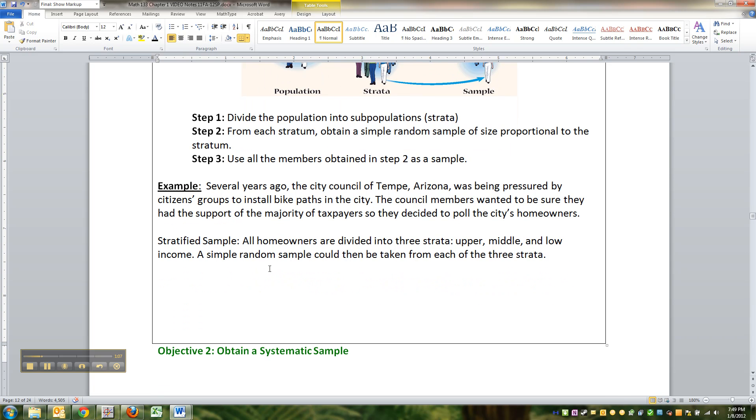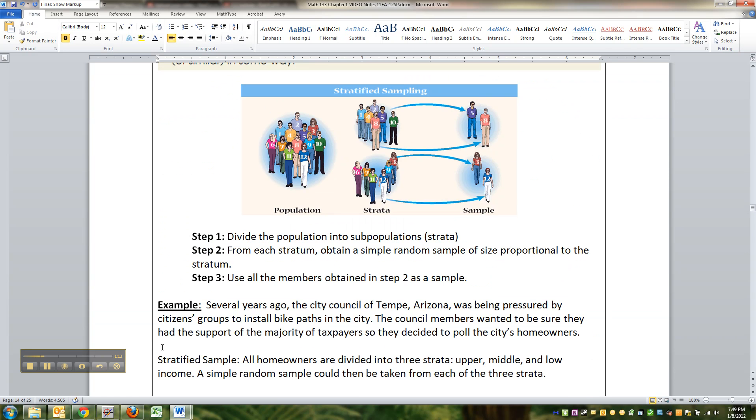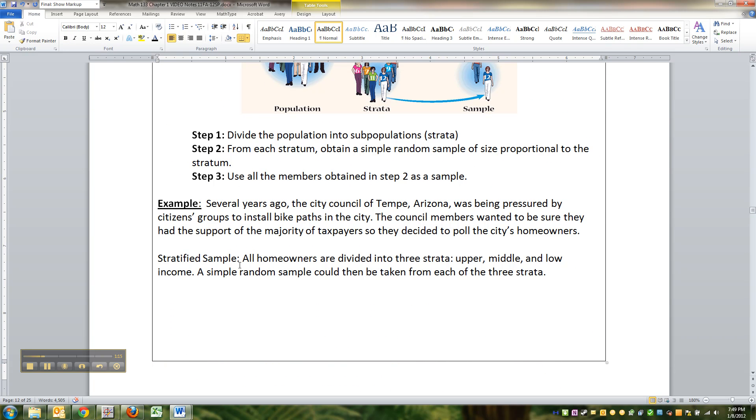So an example I'm giving here is several years ago the City Council of Tempe, Arizona, was being pressured by Citizens Group to install bike paths in the city. The council members wanted to be sure they had the support of the majority of taxpayers.